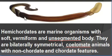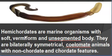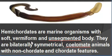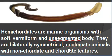This is Balanoglossus — it is a hemichordate. Hemichordates are marine organisms with a soft vermiform body. Vermiform means worm-like and unsegmented. They are bilaterally symmetrical, coelomate animals with both non-chordate and chordate features.